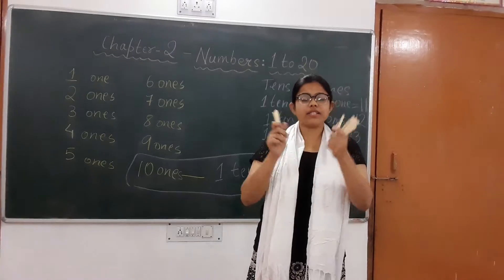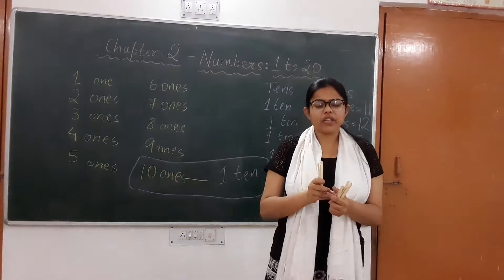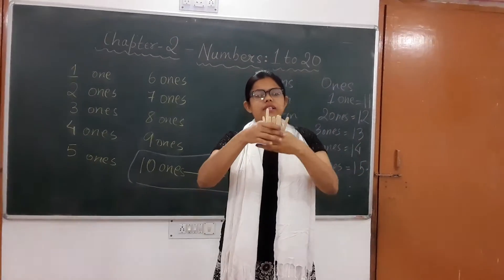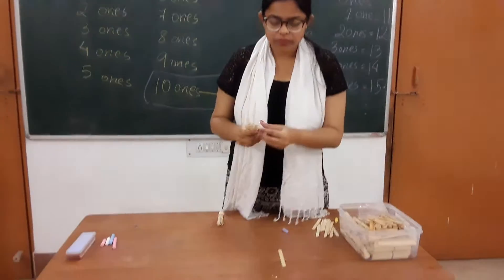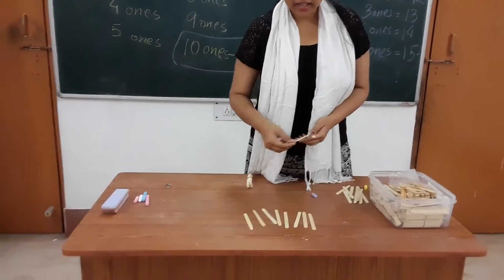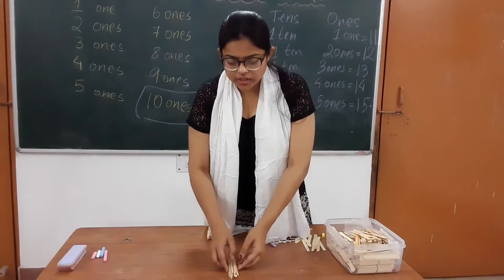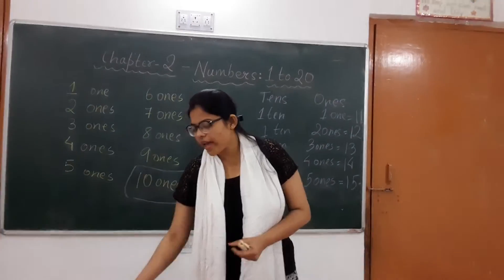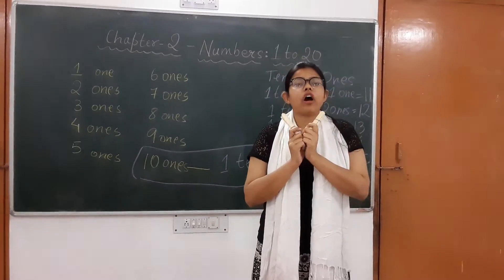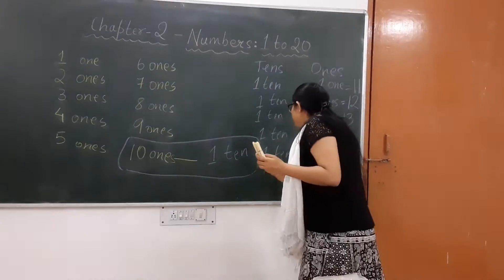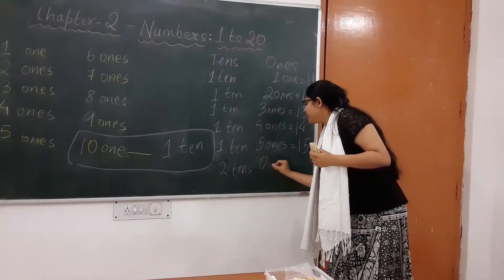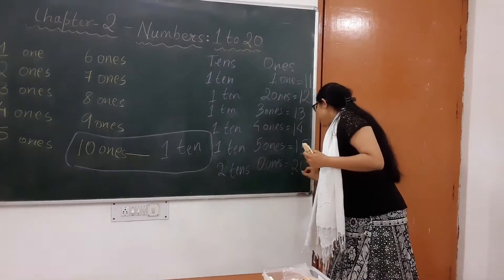1-ten and 8-ones makes 18. 1-ten and 9-ones makes 19. And now this 1-ten and again it is becoming 10. Let me count all these loose sticks — 1-2-3-4-5-6-7-8-9-10. I will put them all together, tie them with a rubber band and make another 10. So now I have 2-tens and no ones — 2-tens and 0 ones makes 20.